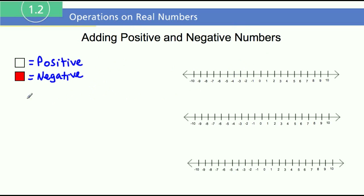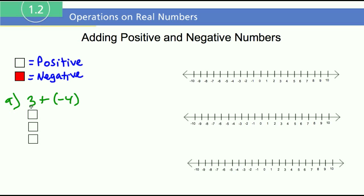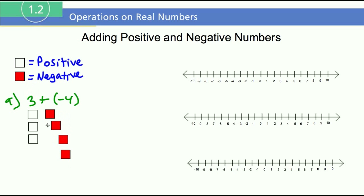Adding positive and negative numbers — say if I wanted to do a problem such as 3 plus negative 4. I have a positive number and a negative number. I'm going to represent positive 3 with 3 positive white blocks: 1, 2, and 3. These 3 white boxes represent 3 positives. Then I'm going to put 4 negative red boxes: 1, 2, 3, and 4. For every 1 positive and every 1 negative, they're going to cancel out.